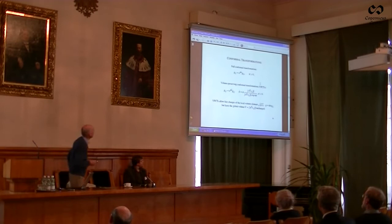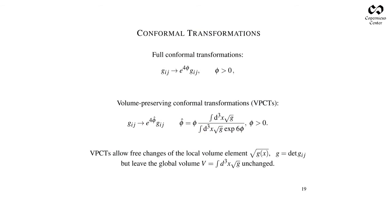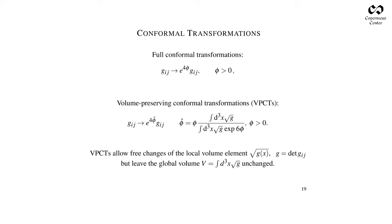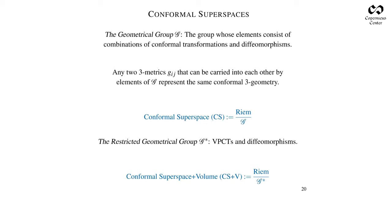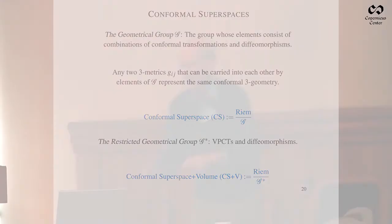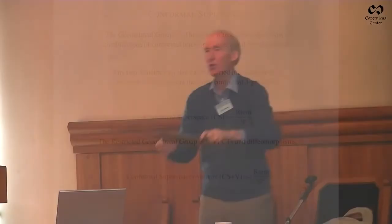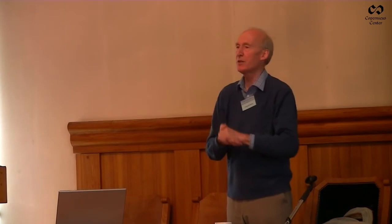Much more interesting now are conformal transformations. A full conformal transformation is obtained by multiplying a 3-metric by a position-dependent function—purely for mathematical convenience, four times a positive function of position. So now, conformal superspace: there are two fundamental groups that come into this—the three-dimensional diffeomorphisms, analogous to moving my two triangles relative to each other, and then the three-dimensional conformal transformations. Essentially, what you have in conformal geometry is the Euclidean symmetry group at each space point.